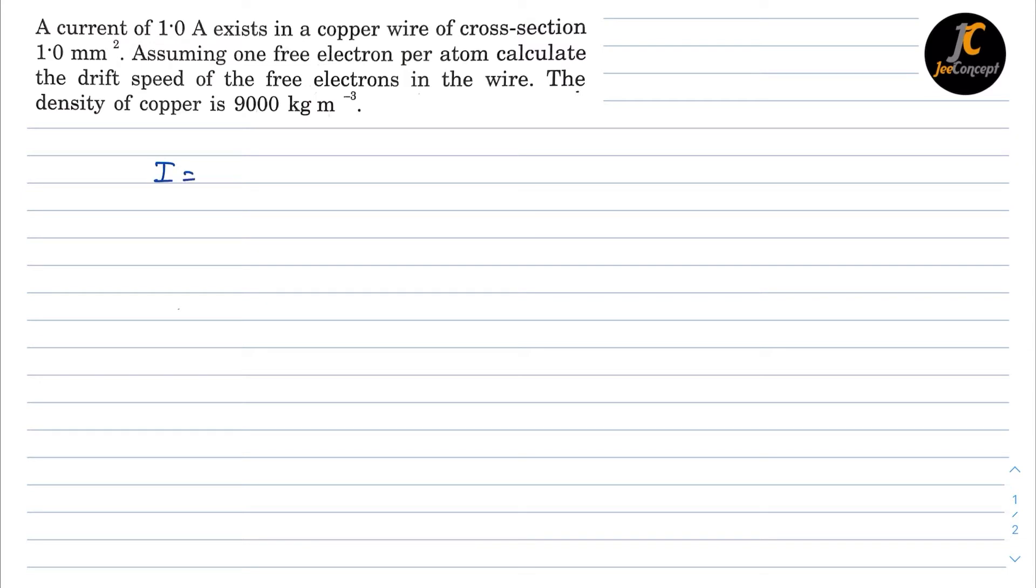I is equal to N E A V D. So V D which is drift velocity can be calculated as I upon N E A. So we know the value of E, we know the value of A and I, but we have to calculate the value of N first.